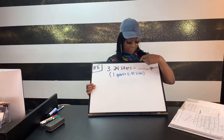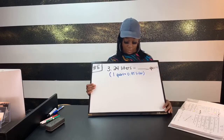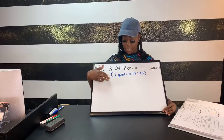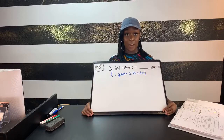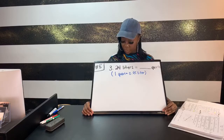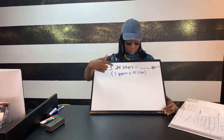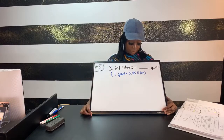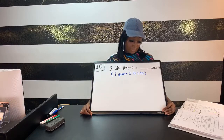They want to know 3.24 liters is how many quarts. They give us a key because this isn't a very common conversion: one quart is equal to 0.95 liters.